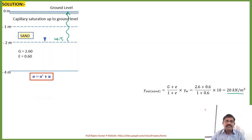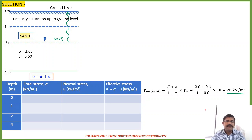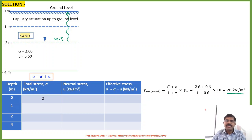Sigma equals sigma prime plus u — that is, effective stress plus neutral stress or pore water pressure. In one of the earlier videos I have discussed all these things; you may check that. In this tabular form, we can prepare the total stress, neutral stress, and effective stress. For total stress, at the ground level there is no external loading, so total stress is zero. Total stress will not be influenced by capillary rise — remember that.